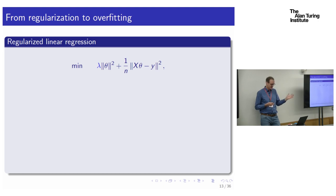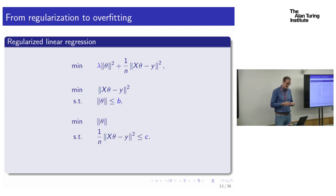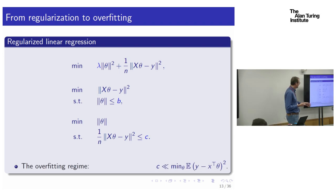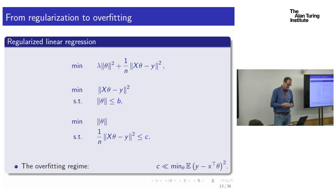The striking thing is we're picking a constraint on fit to the data in this unrealistic regime — the constraint C we impose is zero, certainly much less than sigma-squared, the best possible expected squared error. Once we get down well below that best possible level, we're in this overfitting regime. In a high enough dimensional setting, we can drive the training squared error down to zero, meaning our estimator interpolates every training example.